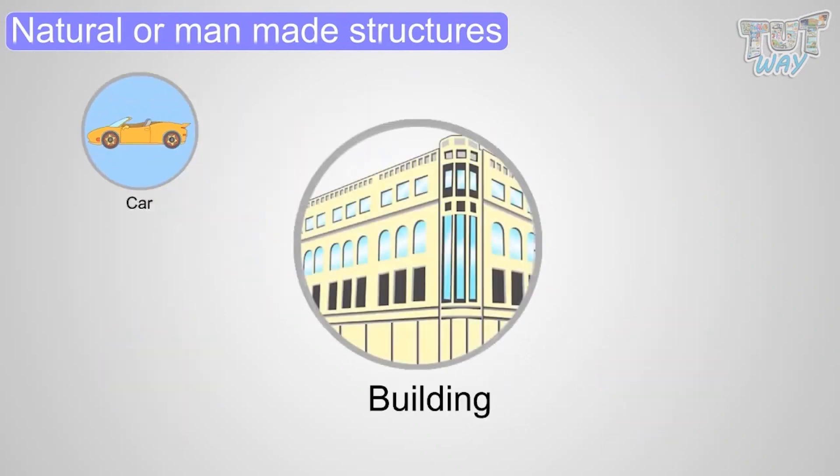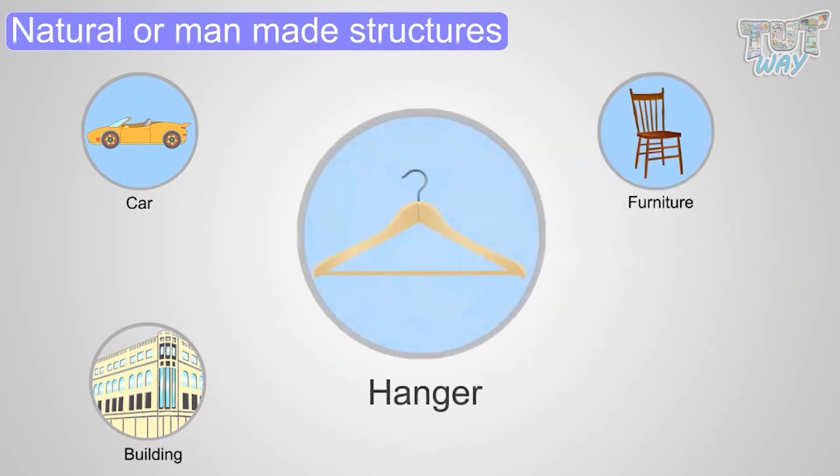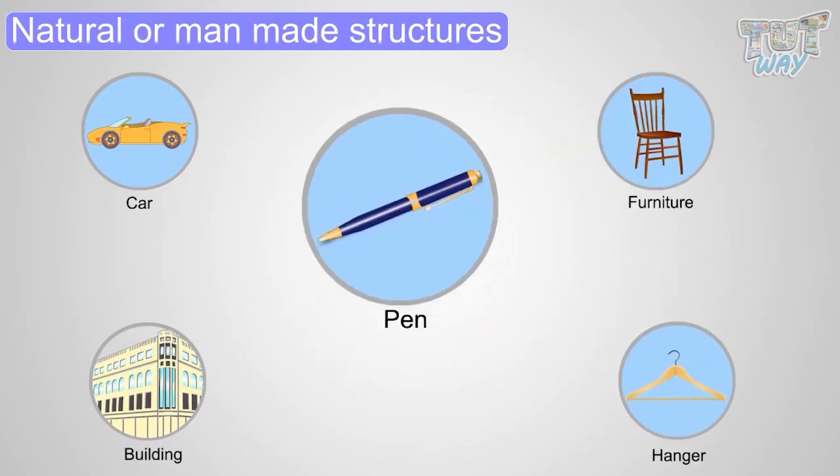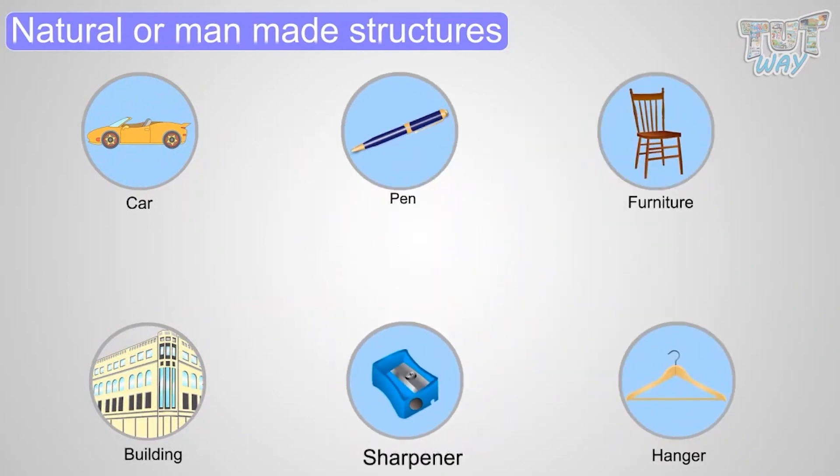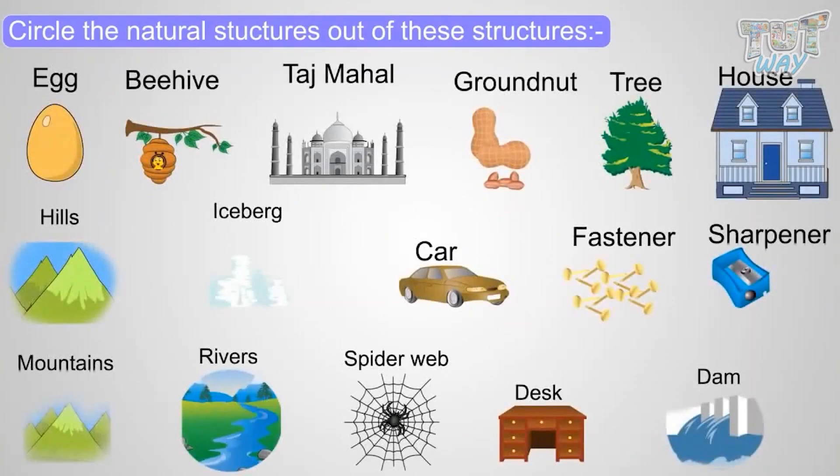Cars, buildings, furniture, hangers, pens, sharpeners are man-made structures. Here we have many structures. Let's circle the natural structures out of these structures.